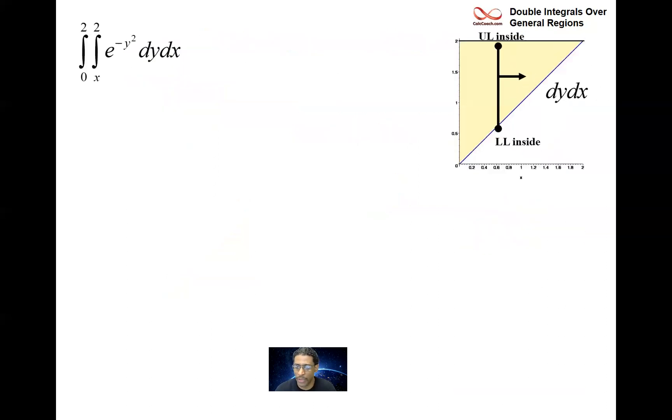We got our dy dx lower limit inside, upper limit inside. And then we move from left to right from zero to two. Not going to work. So we have to switch to dx dy. And so that's a horizontal slice who gets moved upward. Put the circles at the end of your slice because they will dictate to you who your upper limit inside is and your lower limit inside is.